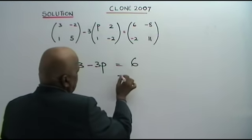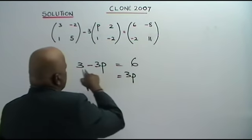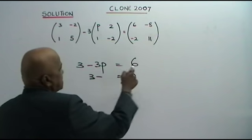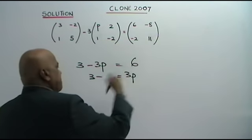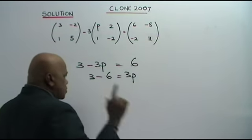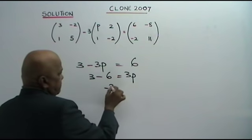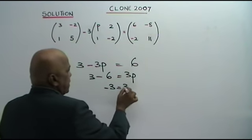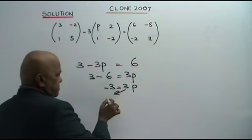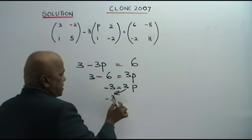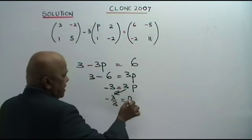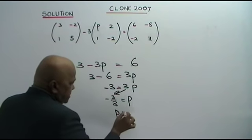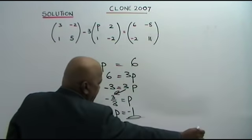Negative 3P bring to the other side is 3P. 3 minus positive 6 bring to this side minus 6. So what do you get? Negative 3 equals to 3P. Bring the 3 down. Negative 3 over 3 equals to P. Therefore, P is equal to negative 1.